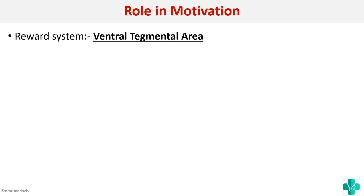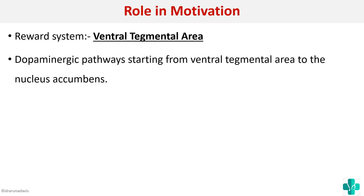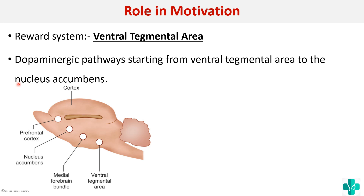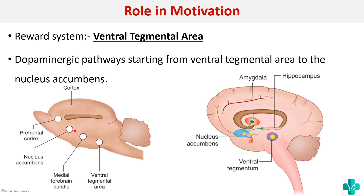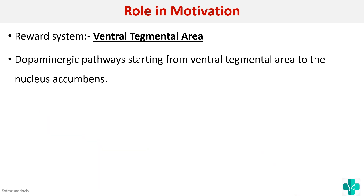The main reward system in the brain is the ventral tegmental area (VTA). There are many dopaminergic pathways that go from the ventral tegmental area to the nucleus accumbens. Stimulation of this dopaminergic pathway causes the reward sensation and motivates the individual.